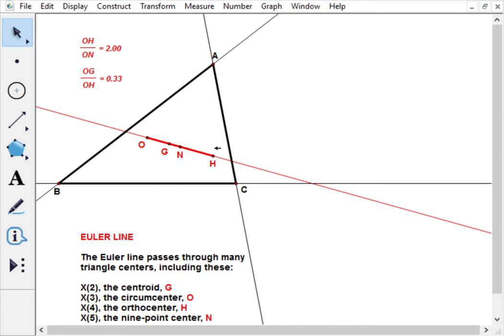These are x2 the centroid, x3 the circumcenter, and x4 the orthocenter. In somewhat standard notation, the centroid is point G, the circumcenter is point O (although sometimes referred to as C),